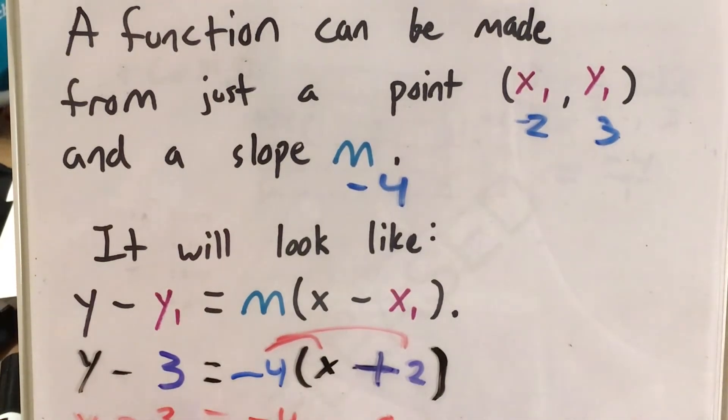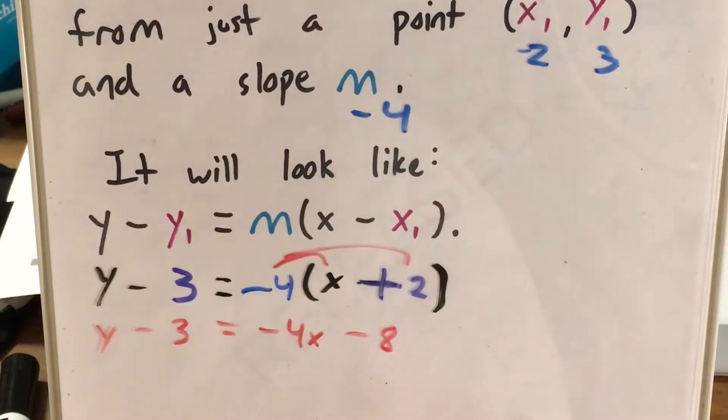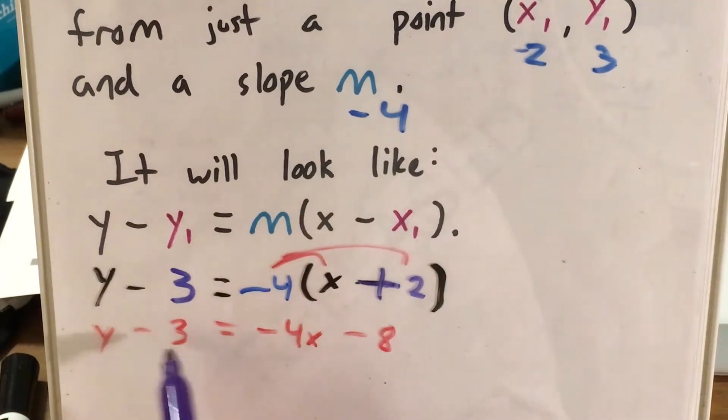That still equals y - 3. Now I want to get y by itself to put this in slope-intercept form. So y - 3 = -4x - 8. I changed the right side by distributing -4.